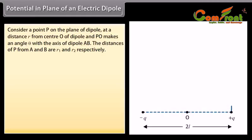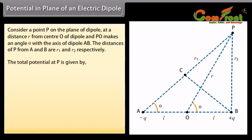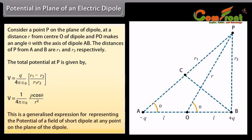Potential in the plane of an electric dipole. Consider a point P on the plane of dipole at a distance R from center O of dipole, where PO makes an angle theta with the axis of dipole AB. The distances of P from A and B are R1 and R2 respectively. The total potential at P is given by V equals Q upon 4π ε₀ multiplied by (R1 minus R2) upon R1R2, which equals 1 upon 4π ε₀ multiplied by P cos θ upon R squared. This is a generalized expression for the potential of the field of a short dipole at any point on the plane of the dipole.